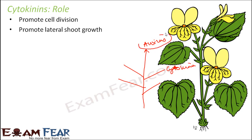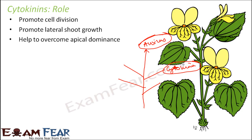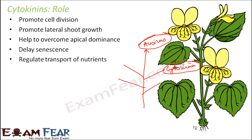Cytokinins can overcome apical dominance. Auxins cause apical dominance, and cytokinin is a solution to it. So if both are present in the right amounts, the overall growth can be taken care of. Cytokinins also help to delay senescence — that is, they delay aging in plants. They do this by helping to transport nutrients properly to different parts of the plant. When a particular part receives a lot of nutrients, it stays healthy and its aging is delayed. So cytokinin regulates the transport of nutrients.